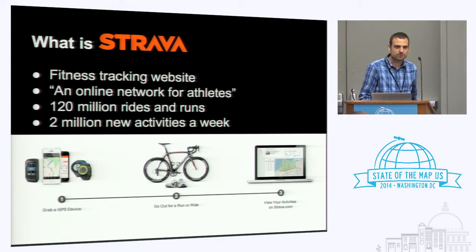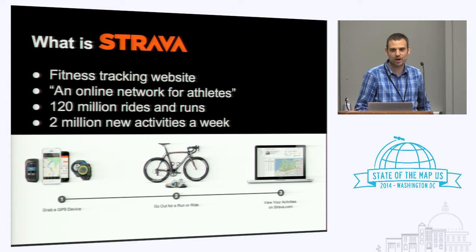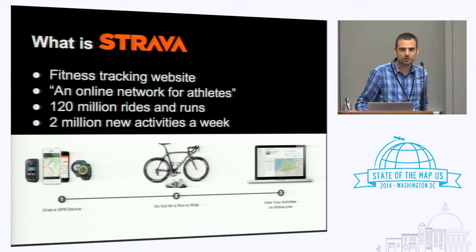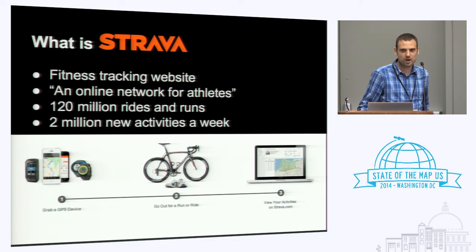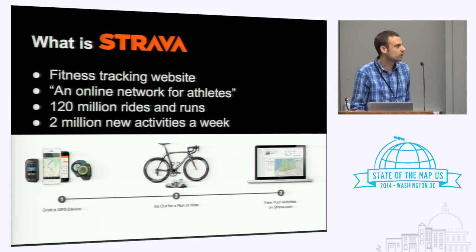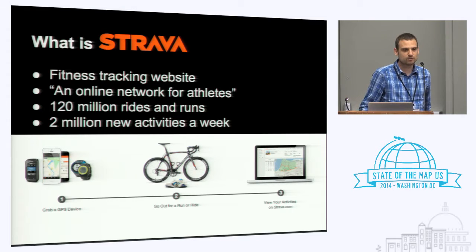If you don't know what Strava is, it's a fitness tracking website. You basically grab a GPS — whether that's your phone or a Garmin or something else — you go out for a ride or a run, upload it to the website and app, and we show you all sorts of great things and connect you with your friends. The interesting part for mappers here is that we have a lot of GPS data — right now about 120 million rides, and 2 million rides and runs a week. It's growing really fast, and this talk is basically about how we can use that data for good things.